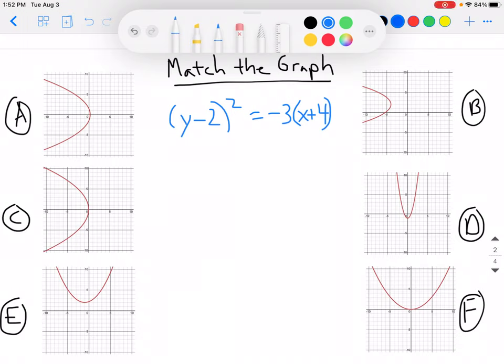Hello and welcome to this video where we're going to match the graph of a parabola based off of its equation. So the equation that we have here is the quantity of y minus 2 squared is equal to negative 3 times the quantity x plus 4.